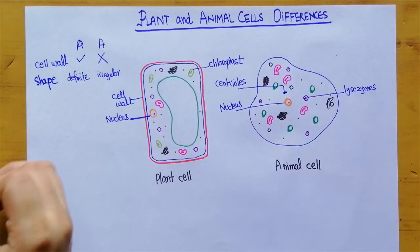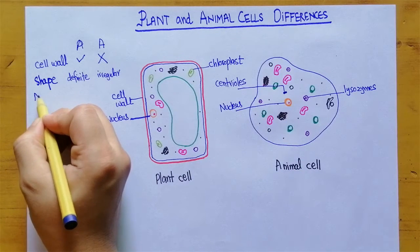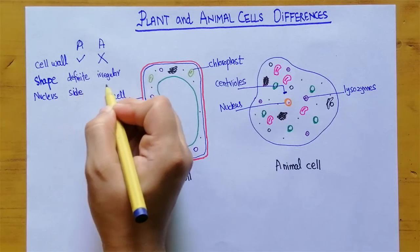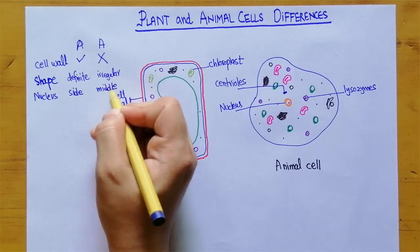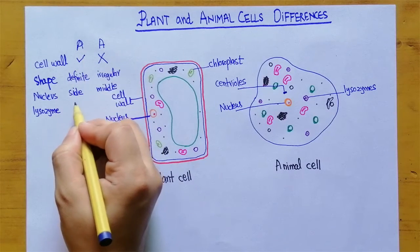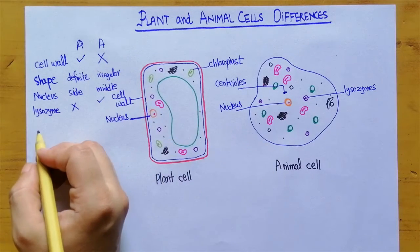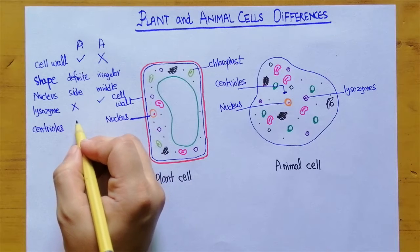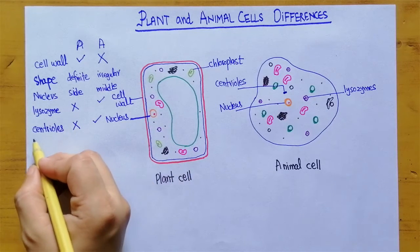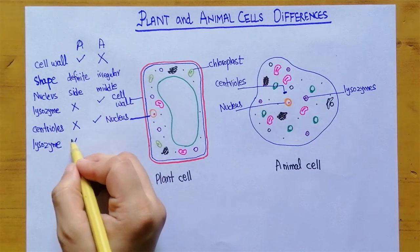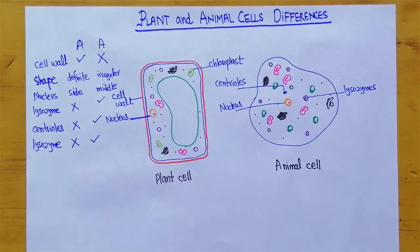To write it down: in plant cells the nucleus is at the side, while in animal cells it is in the middle. Lysosomes are absent in plant cells but present in animal cells. Similarly, centrioles are absent in plant cells but present in animal cells.